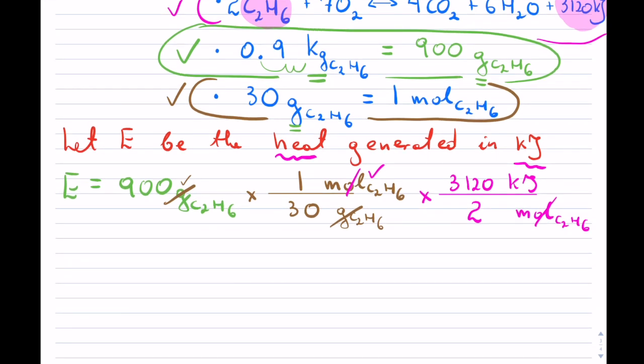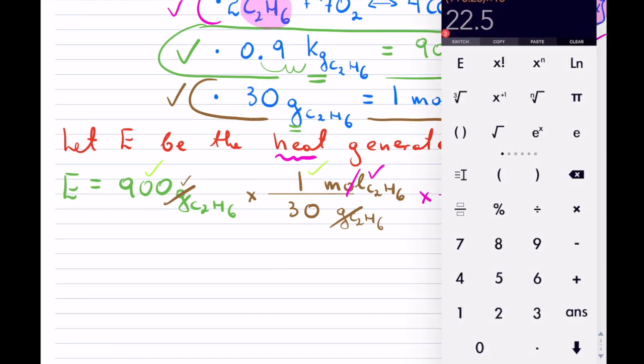I will take all the numbers on top that I have here. So 900 times 1 times 3,120. So let me do that. 900 times 1 times 3,120. I'll hit equals.